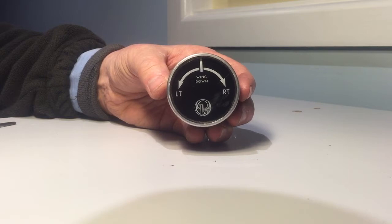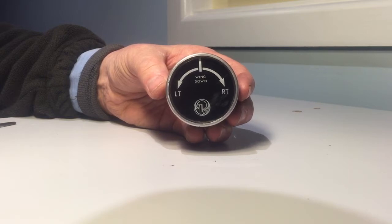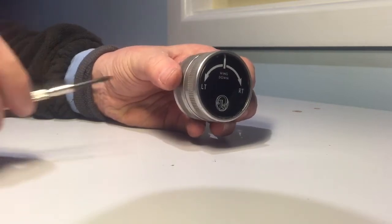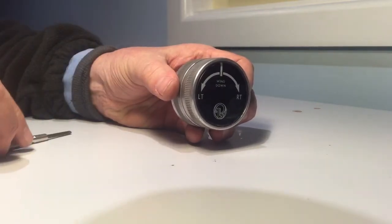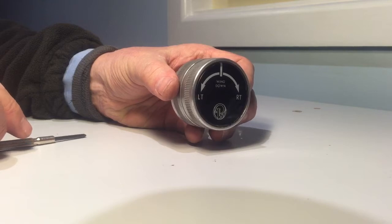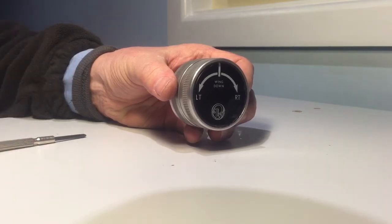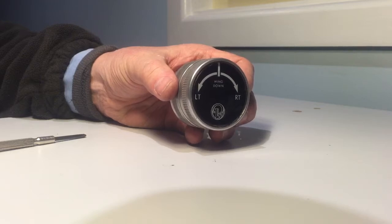Here we have a standard Beechcraft trim knob. I've got this one with the knurled surfaces, and I've got one with a dimpled surface as well. They are the same in my experience, the guts and how they mount and how they work.